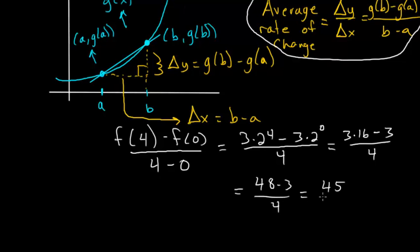So we have 45 over 4, which you can write as a mixed number as 11 and 1 fourth. So either of these would be the correct answer for the average rate of change of our function.